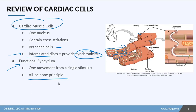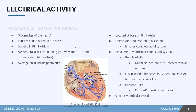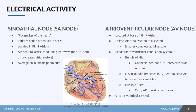Now let's take a look at the electrical framework of the heart. In the heart, there are several nodes that stimulate contraction. You have the SA node or sinoatrial node, and the atrioventricular node or AV node. The sinoatrial node is the pacemaker of the heart — it initiates the action potentials 70 to 80 times per minute. It's located in the right atrium, and the action potential is sent via the atrial conducting pathway to both atria, creating atrial systole.